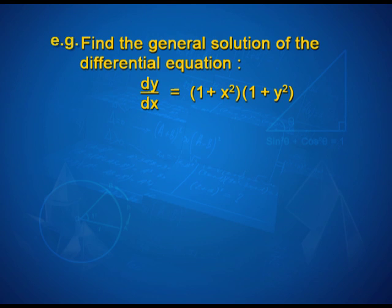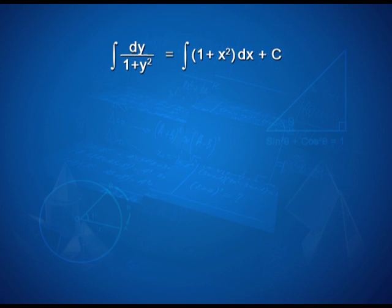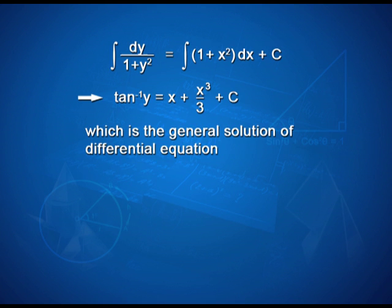Another example: find the general solution of dy/dx = (1 + x²)(1 + y²). This can be written as dy/(1 + y²) = (1 + x²) dx. On integrating, we get ∫dy/(1 + y²) = ∫(1 + x²) dx + c, which gives tan⁻¹y = x + x³/3 + c, the general solution.